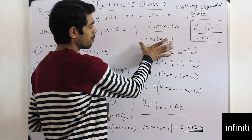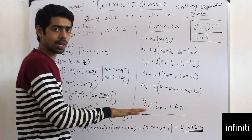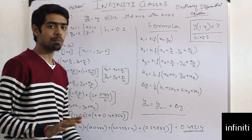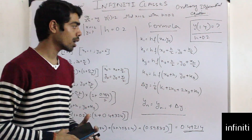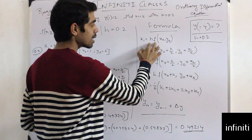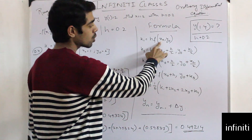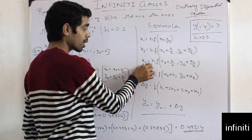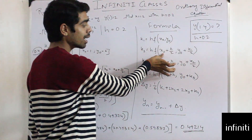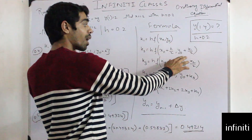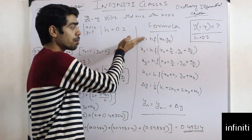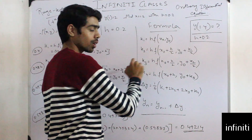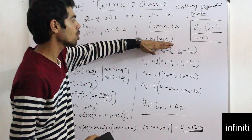If we remember k1, we can remember all the formulas. k1 = h · f(x₀, y₀). For k2, the first part is the same; with x₀ we add h/2, and with y₀ we add k1/2. For k3, with x₀ we add h/2 (same as k2), and with y we add k2/2 — just the previous k value. For k4, we add just h and k3.